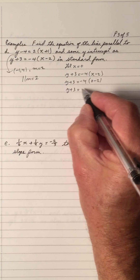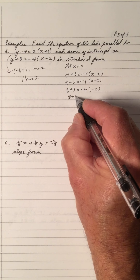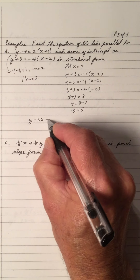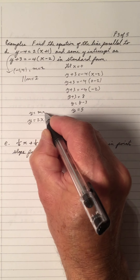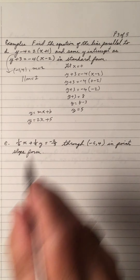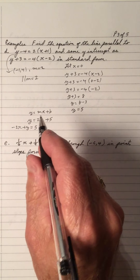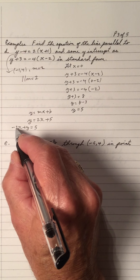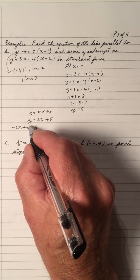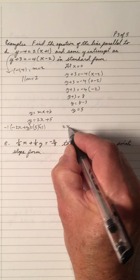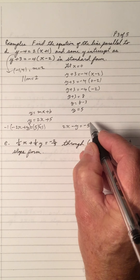We do BEDMAS — inside the brackets first, which is negative 2. We multiply to get 8. And y equals 8 minus 3, so y is 5. So the slope is 2 and the y-intercept is 5, meaning the equation is y equals 2x plus 5 in slope y-intercept form. We want standard form, so move the x over: negative x plus y equals 5. In standard form we can't have a negative leading term, so multiply all sides by negative 1. That gives 2x minus y equals negative 5 as the standard form.